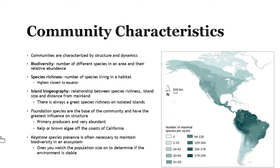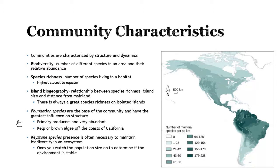To better understand communities, we study foundation species and keystone species. Foundation species are at the base of the community and have the greatest influence on structure — you'll often see them as primary producers that are very abundant. An example is kelp and brown algae off the coast of California, or coral in coral reefs. When the foundation species starts to die off, other species leave too. If you don't have a good foundation, you start to see cracks — the walls fall down and everything else follows.